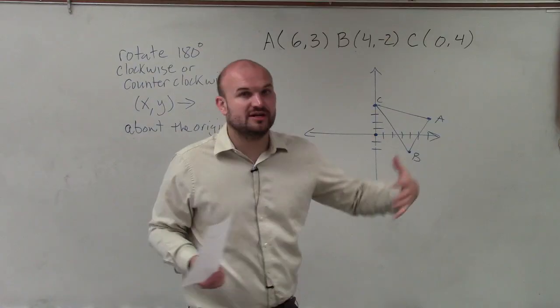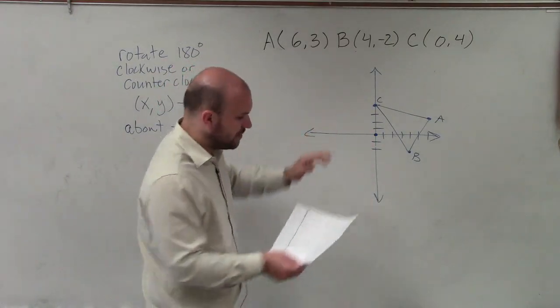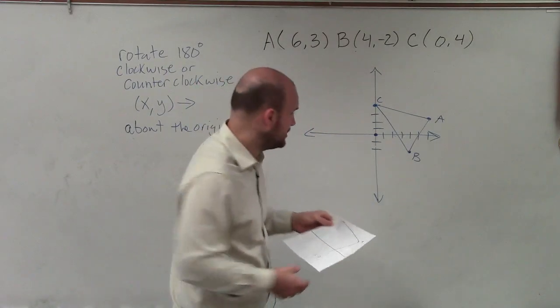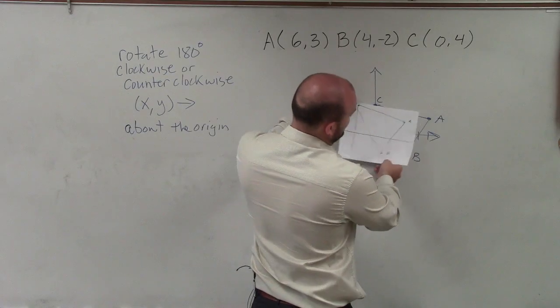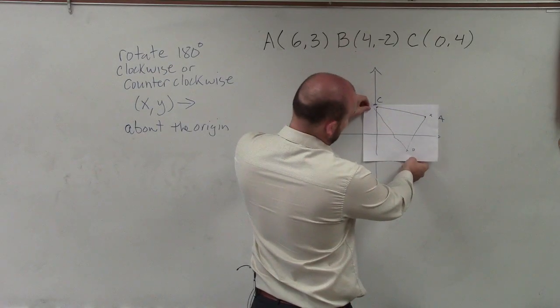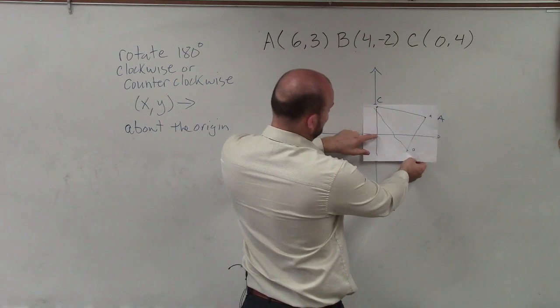So here's my origin. When I'm looking at rotation, that's going to be like my fixed point. So I like to, a lot of times, use wax paper or parchment paper and graph what exactly my image looks like. And you can see here I roughly have the shape of my triangle right down there. And I make sure I have my origin right there.